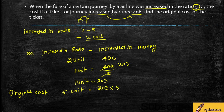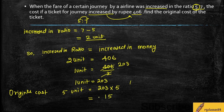The original cost is 5 units. So 203 multiplied by 5: 5 times 3 is 15, carry 1; 5 times 0 is 0, plus 1 is 1; 5 times 2 is 10. So the original fare is Rs. 1,015.